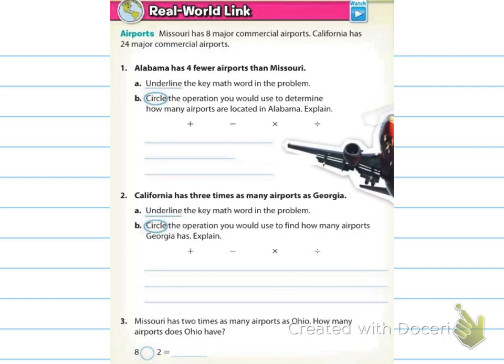For number one, it says Alabama has 4 fewer airports than Missouri. We've already learned that Missouri has 8 major commercial airports, and they're saying that Alabama has 4 fewer than Missouri. So we know that Missouri is 8, and that Alabama is 4 fewer. It says to underline the key math word in the problem, we're going to talk about fewer here, and then circle the operation you can use to determine how many airports are located in Alabama. It's going to be a subtraction problem. It's going to be 8 minus 4. There are 4 airports in Alabama.